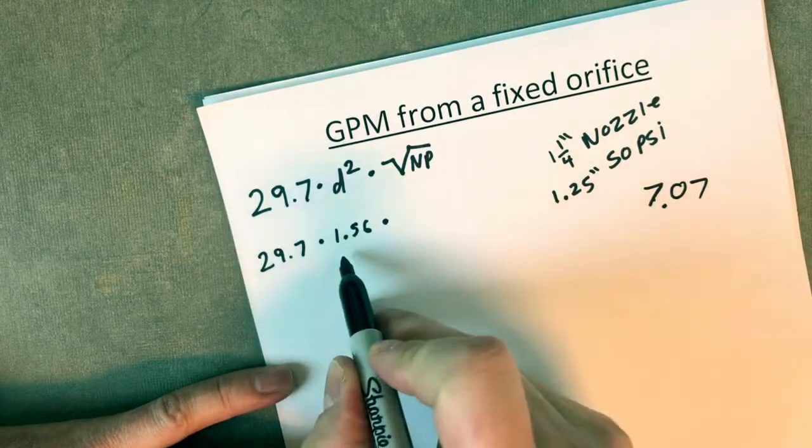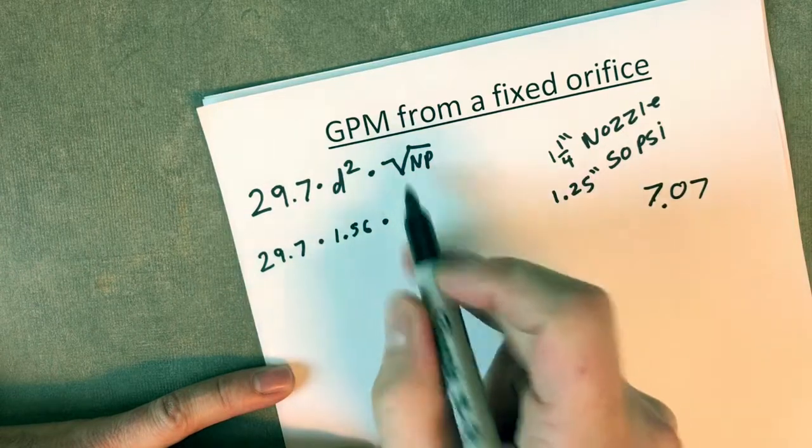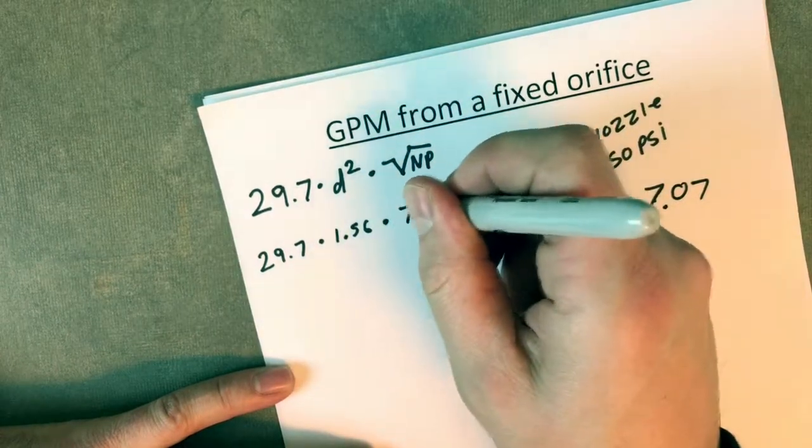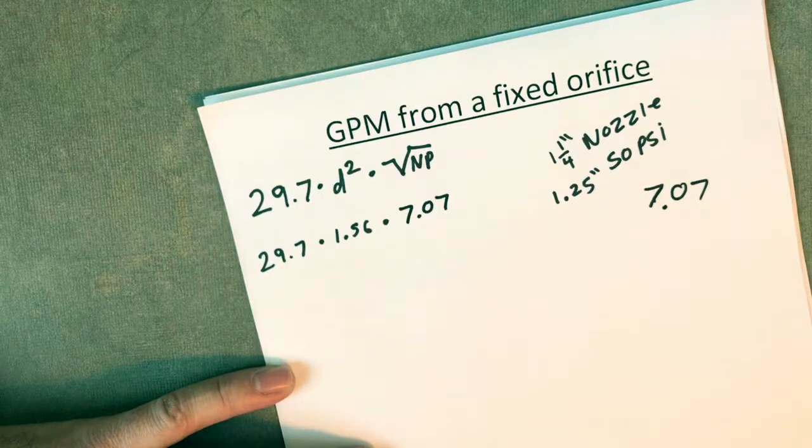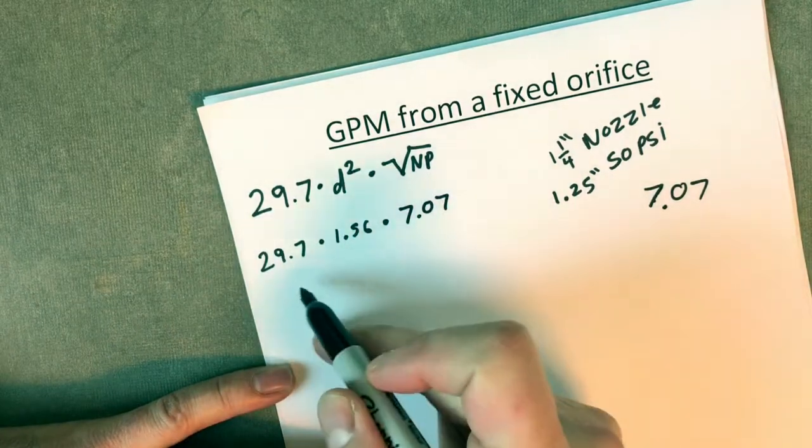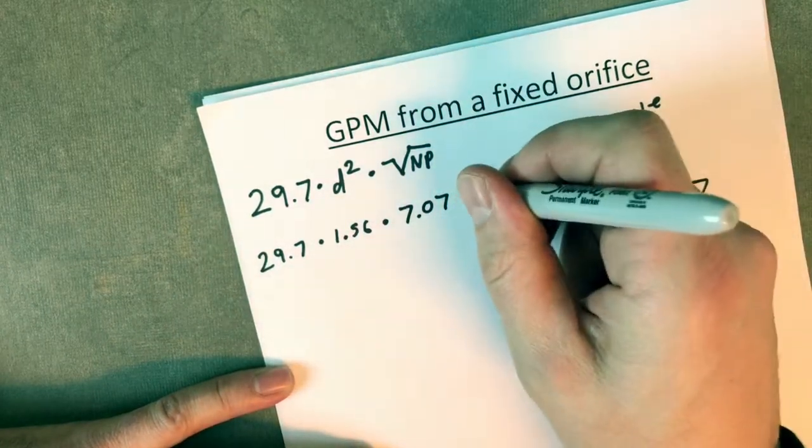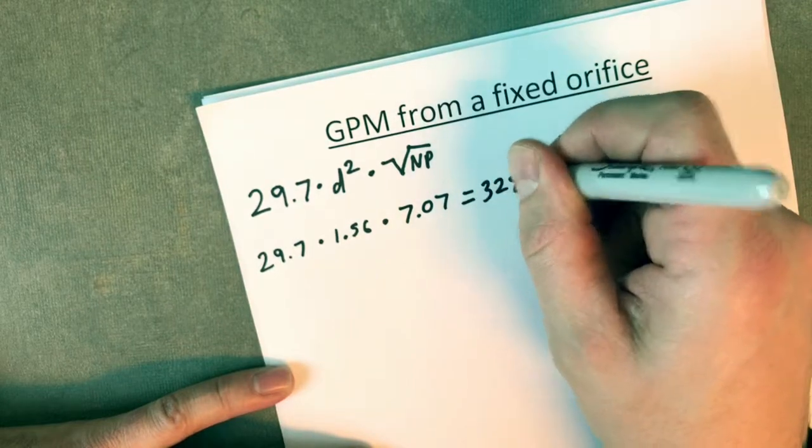So 29.7 times the tip diameter squared times 7.07. We go through and calculate all this and we come out with 328.